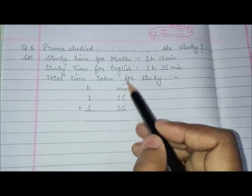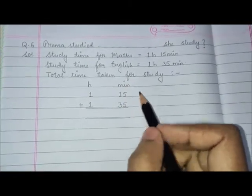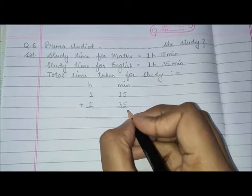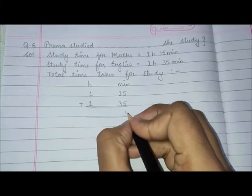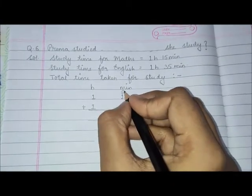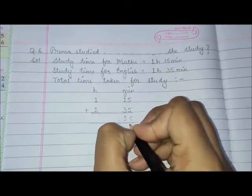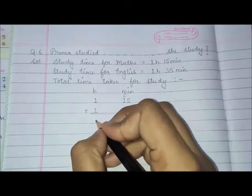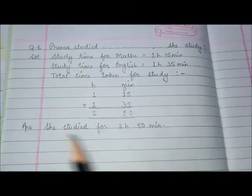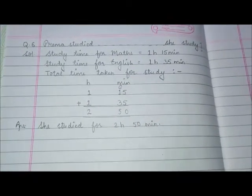Again you have to make separate columns for hours and minutes. Add minutes first: 5 plus 5 is 10, so 0 here, 1 carry. 1 plus 1 is 2, plus 3 is 5. So 50 minutes. And 1 plus 1 is 2 hours. She studied for 2 hours 50 minutes.